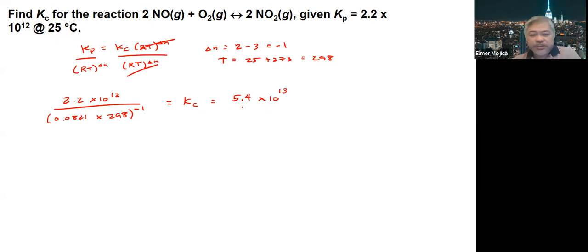And again, based on here, Kc is higher than Kp, which tells us that there's more reactant compared to the product.